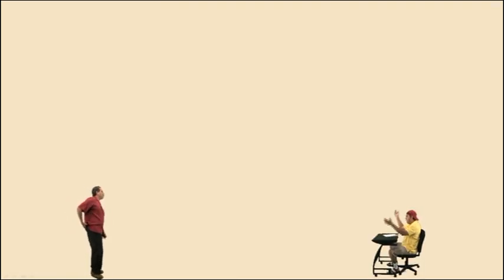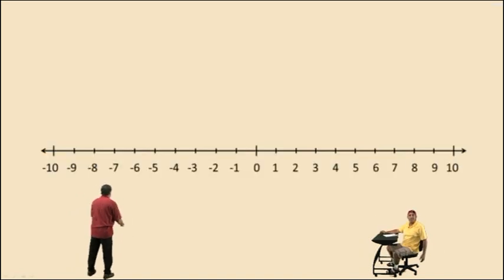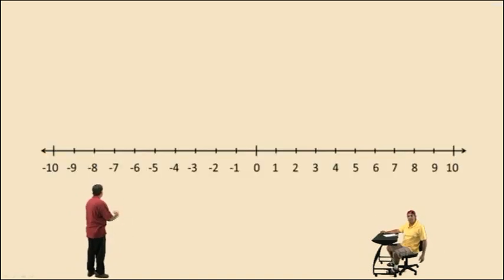But before we get started, we got to get out Charlie. He better be ready to go. Hey Charlie, you ready to go? We're doing subtracting negative numbers. Okay, let's get started right there. Here's the number line. Now let's start with this word statement: